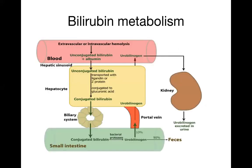Inside the blood, the bilirubin formed is unconjugated bilirubin, because conjugation occurs inside the liver. This unconjugated bilirubin combines with albumin and travels toward the liver. When it reaches the hepatic sinusoid, only the bilirubin enters the liver — albumin remains outside. Inside the liver, bilirubin is conjugated by the enzyme UDP-glucuronyl transferase.